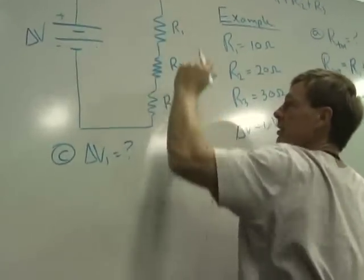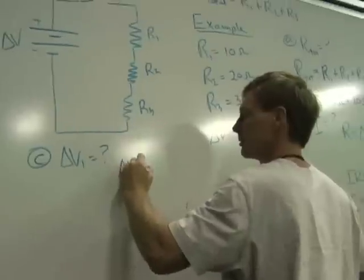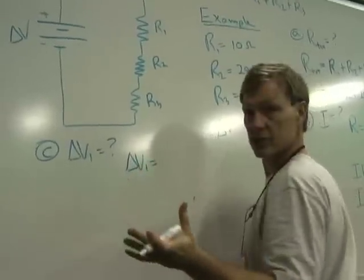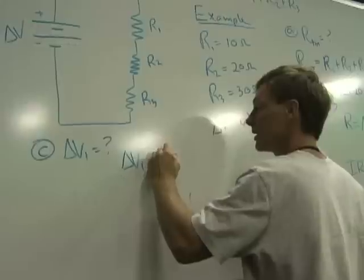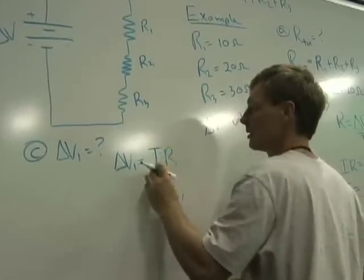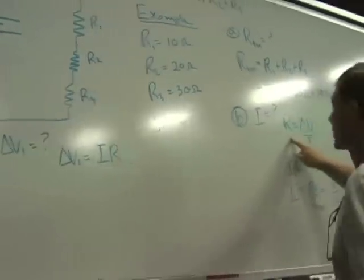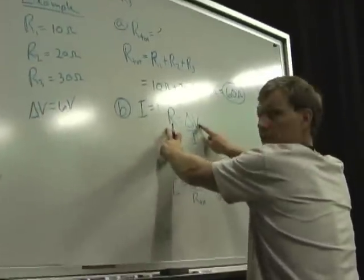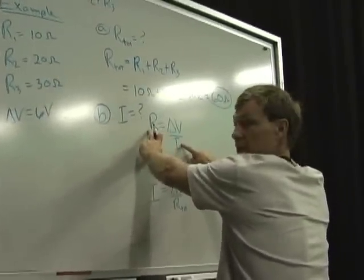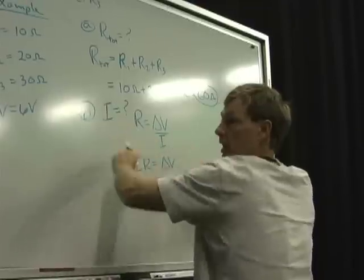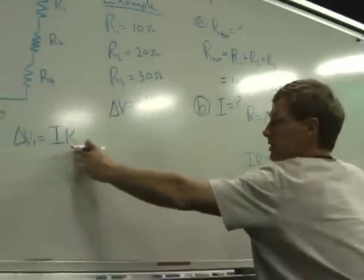this is just another form of Ohm's law. What I did was I solved, let's see, right here, resistance. I solved it for voltage. So I multiplied both sides by current. And I get voltage is current times resistance.